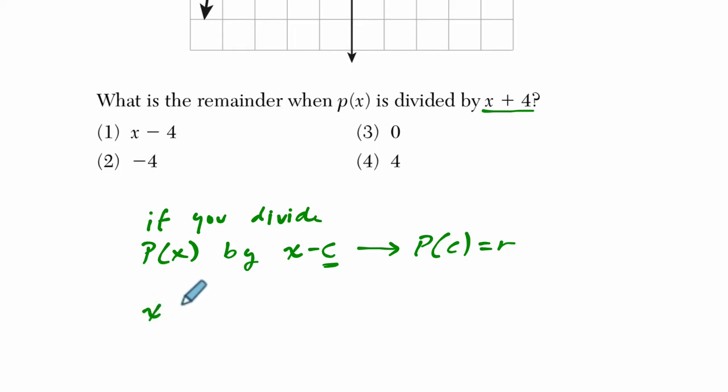So to write that X plus 4 as a subtraction statement, you would write X minus what? X minus negative 4. So this is really X minus negative 4, and that means that in this case, C is negative 4.